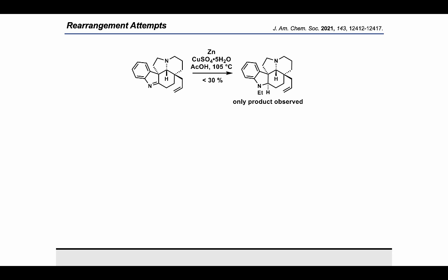The carboxylic acid was taken on crude and subsequently heated in toluene at 90°C for 16 hours to give the desired indolenium substrate in 73% yield over two steps. Unfortunately, when we attempted Hajizac's reported procedure, in our hands only the undesired 1,2-reduction of the imine was observed. This corresponded with Saxton's results. Our subsequent attempts to affect this rearrangement involved examining different forms of zinc: zinc dust, zinc powder, zinc granules, zinc turnings, as well as aged zinc sources and its common byproducts such as zinc oxide and zinc carbonate. In all these studies, we were unable to observe the desired rearrangement.